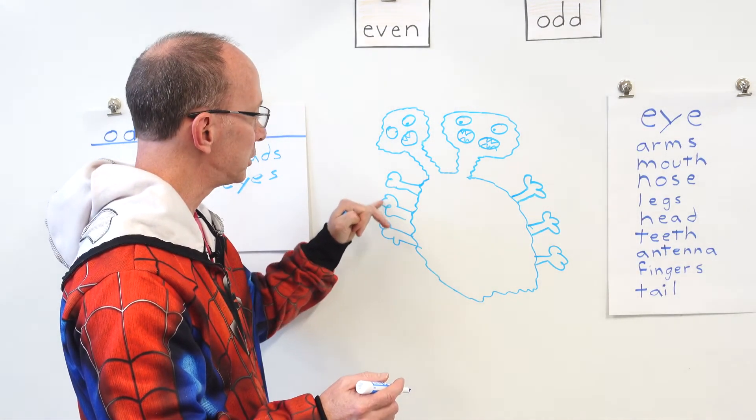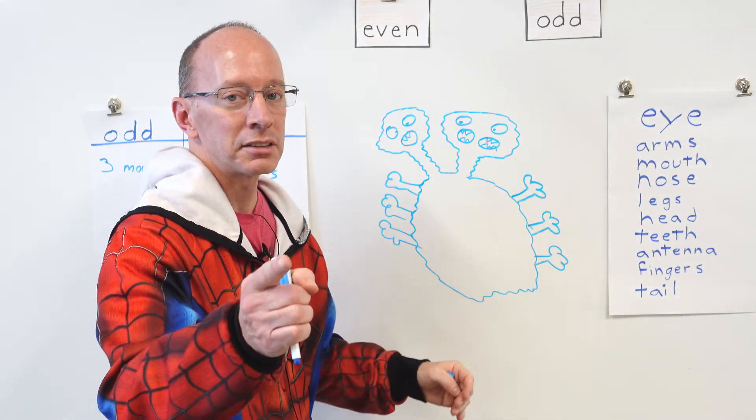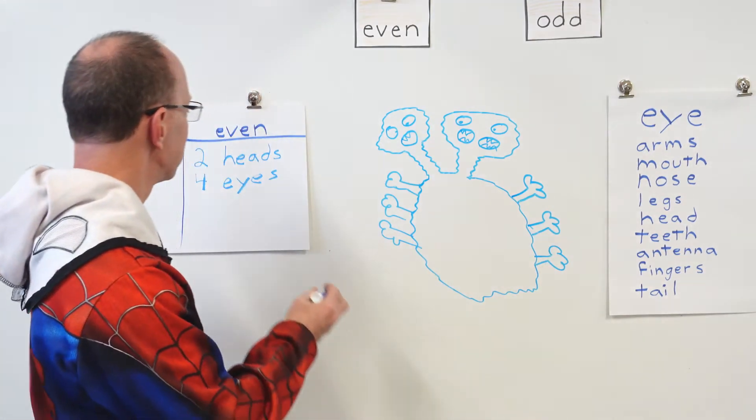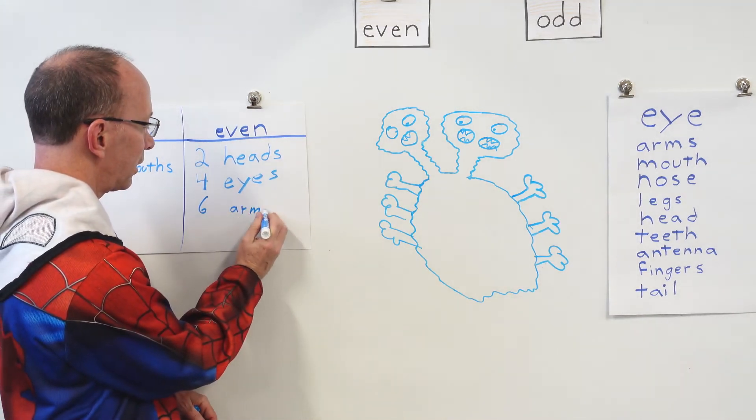Here, let's count the arms. We've got one, two, three, four, five, six. We've got six arms. Six is, that's right, six is an even number. Six arms.